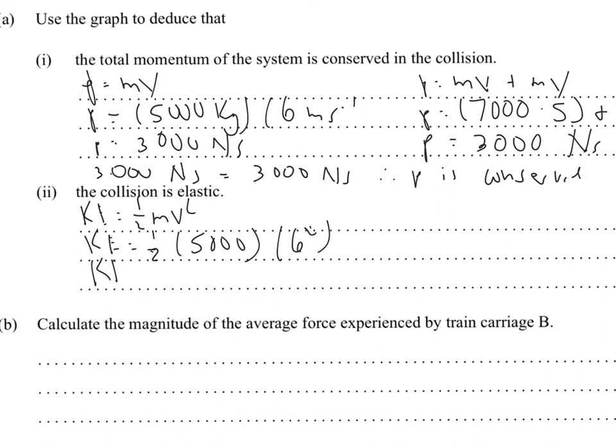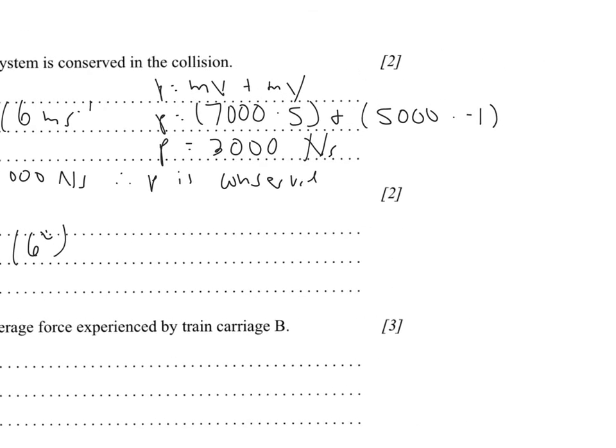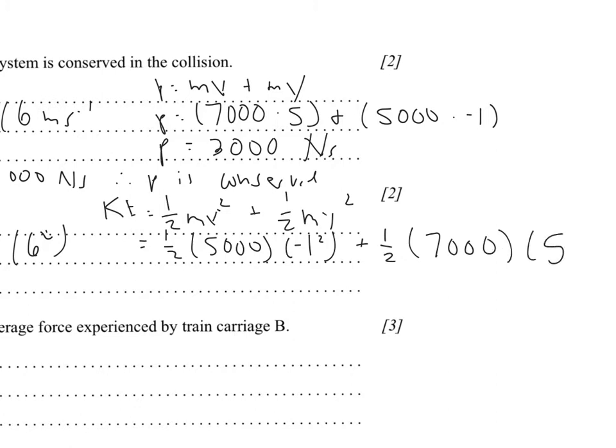And this gives you a kinetic energy of 9,000 joules. And then, the kinetic energy after, just like with momentum, is equal to the kinetic energy of either body added. So, you have KE equals 1 half mv squared plus 1 half mv squared. So, 1 half of the first carriage, you have 5,000 times negative 1 squared plus 1 half 7,000. This is of carriage B. The final is 5 meters per second squared.